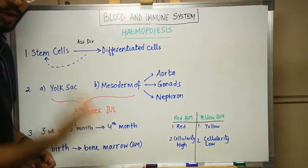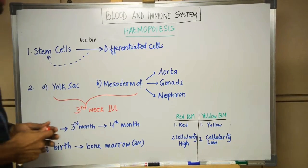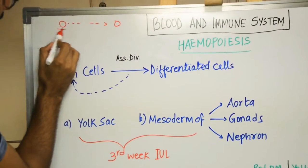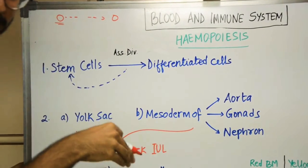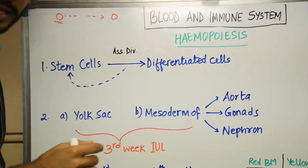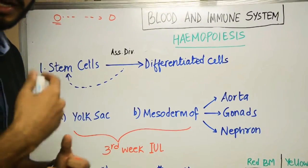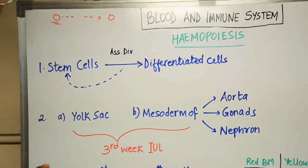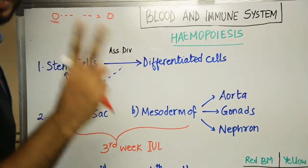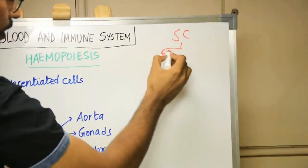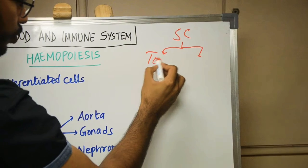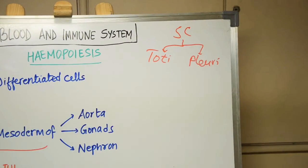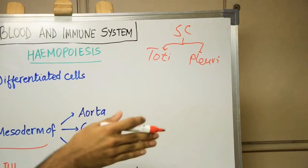The starting cells of hemopoiesis are known as stem cells. Stem cells are cells which have the ability to form different types of cells in the body. There are two types of stem cells: totipotent stem cells and pluripotent stem cells. Totipotent stem cells can give rise to all other cells in the body — 'toti' means total, so they can form a total body from their own cells.